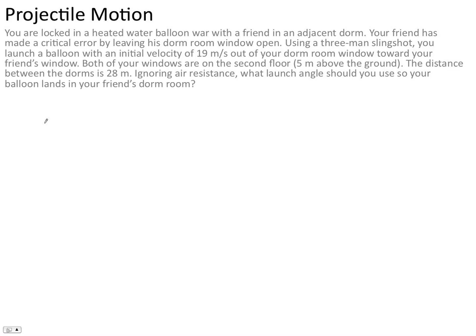water balloon with an initial velocity of 19 meters per second out of your dorm window toward your friend's window. Both of your windows are on the second floor, they're both the same distance above the ground. The distance between the dorms is 28 meters. Ignore air resistance. What launch angle should you use so your balloon lands in your friend's dorm room?